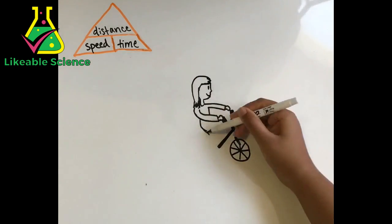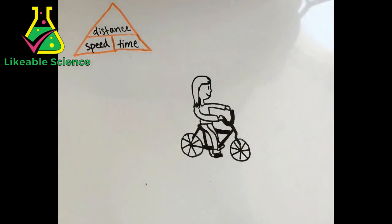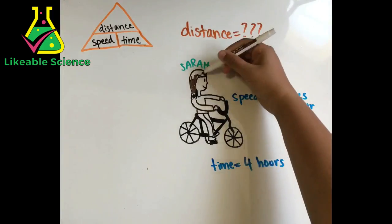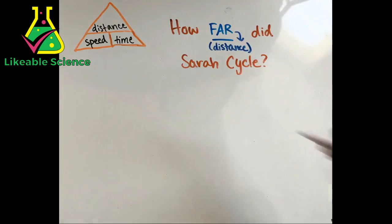Last but not least, let's solve for distance. If Sarah is cycling 15 miles per hour for 4 hours, how far did she cycle? The equation for distance is distance equals speed multiplied by time.